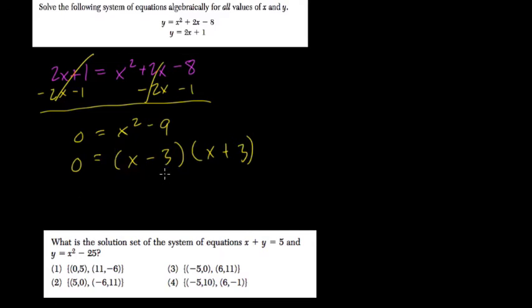So that means x minus 3 could equal 0, and if that's true, add 3 to both sides and x equals 3, or x plus 3 could equal 0, and then subtract 3 from both sides and x equals negative 3.